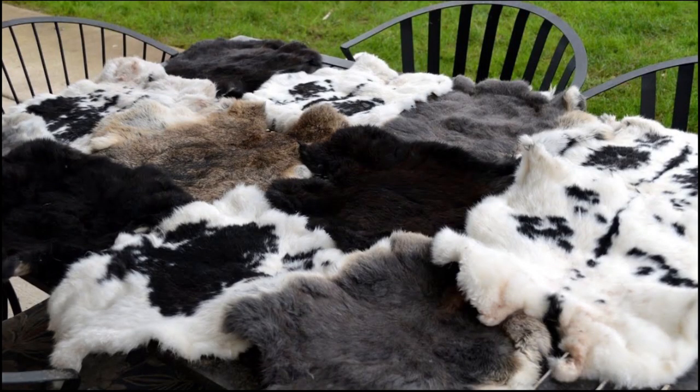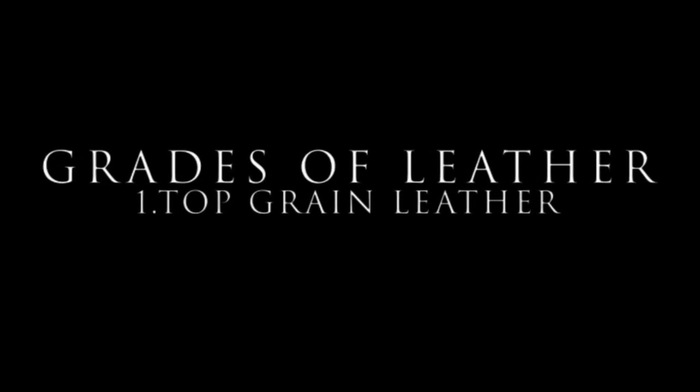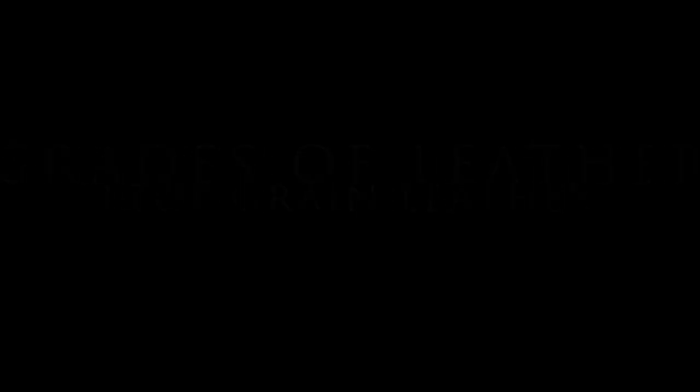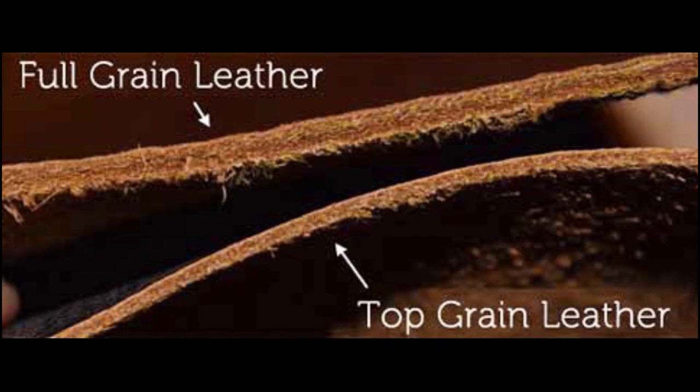Grades of leather: leather is produced in the following grades. Top grain leather includes the outer layer of the hide known as the grain, which features finer, more densely packed fibers, resulting in strength and durability. Depending on the thickness, it may contain some of the more fibrous layer underneath known as the corium. Types of top grain leather include full grain leather, which contains the entire grain without any removal of the surface.